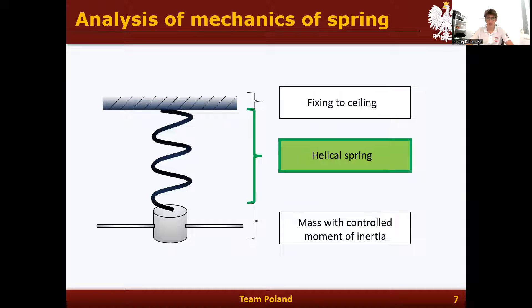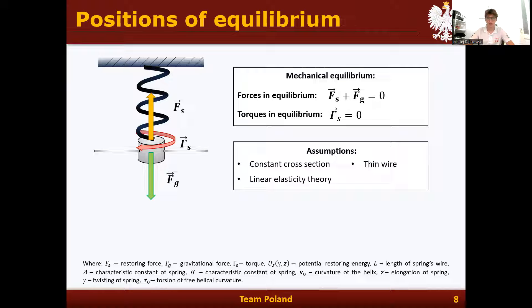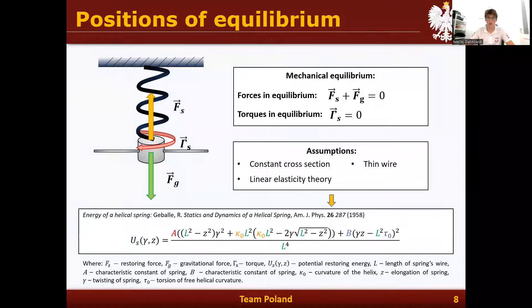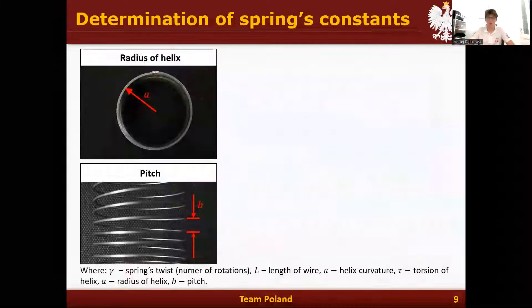In order to analyze the behavior of the Wilberforce pendulum, we need to analyze the helical spring first. A helical spring is in mechanical equilibrium when both the net force and the net torque are equal to zero. Assuming the wire has a constant cross-section and is thin, we can use linear elasticity theory to describe the potential energy of the helical spring. This potential energy depends on elongation of the spring, rotation of the spring, and five parameters of the helical spring, three of which depend on the geometry.